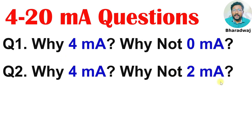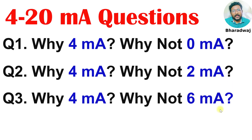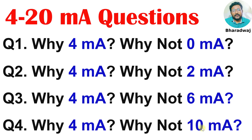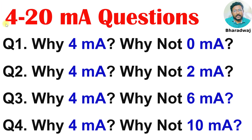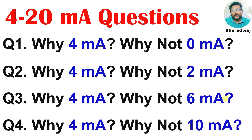The next question: why not 2 mA? Why not 6 mA? Why not 10 mA? We can use any value, right? Why are we using 4? Why are we not using 0? Similarly, why not 10, 15, 20, 30, or any other value for the starting point? 4 is the zero scale, 20 is the full scale. For the zero scale, we could also use 0 mA, 2 mA, 6, 10, 15, 20, 25 — any value. So we will discuss the reasons behind 4 mA.